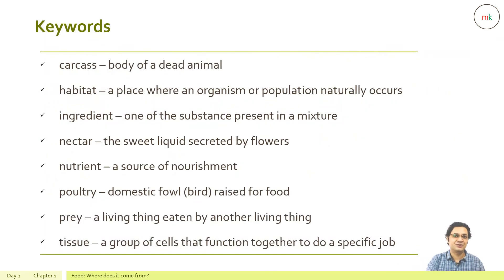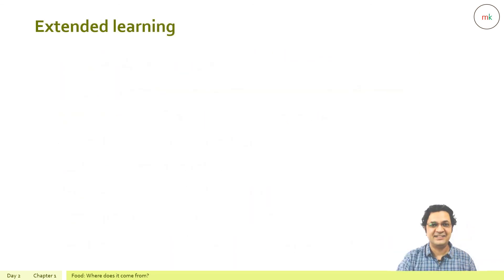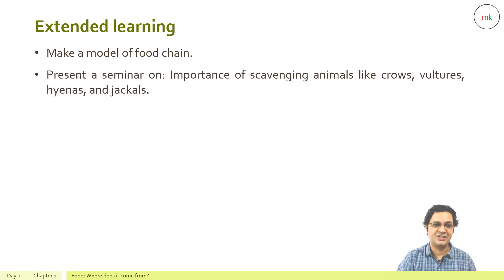Let's review some keywords from the chapter. Carcass: the body of a dead animal. Habitat: a place where an organism or population naturally occurs. Ingredient: a substance present in a mixture. Nectar: the sweet liquid secreted by flowers. Nutrient: a source of nourishment. Poultry: domestic fowl raised for food. Prey: a living thing eaten by another living thing. Tissue: a group of cells that function together to do a specific job.